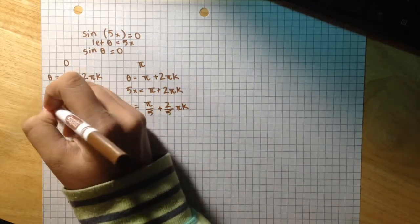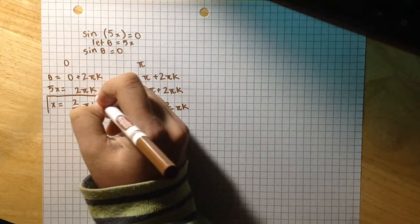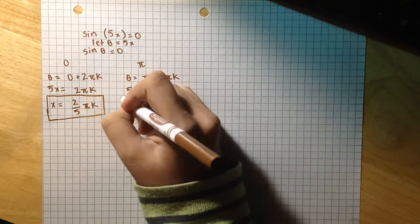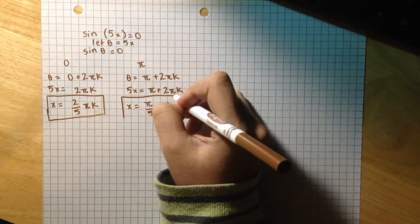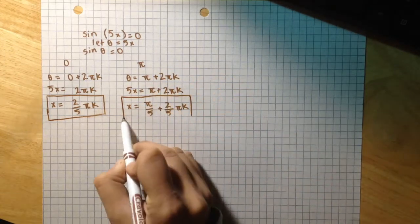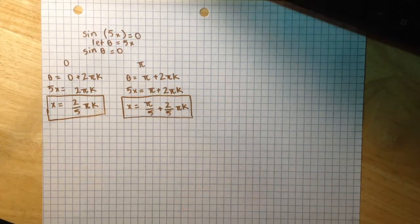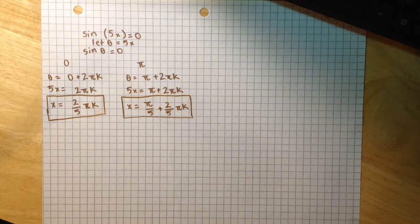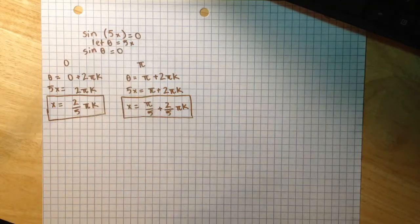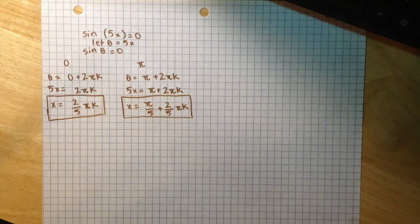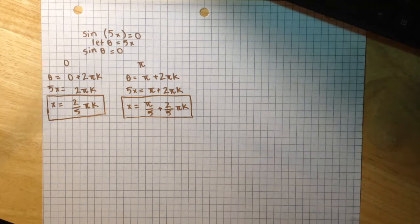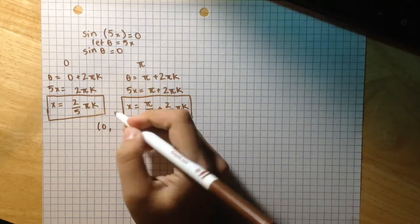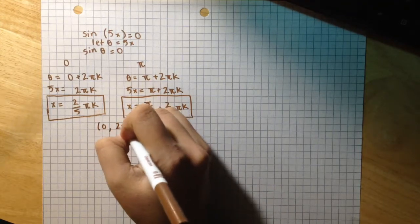So these are our two equations that we can use to write all of the infinitely many solutions there are to this equation. Now in the next part of the question, we are asked to list those solutions which are in the interval 0 to 2π.